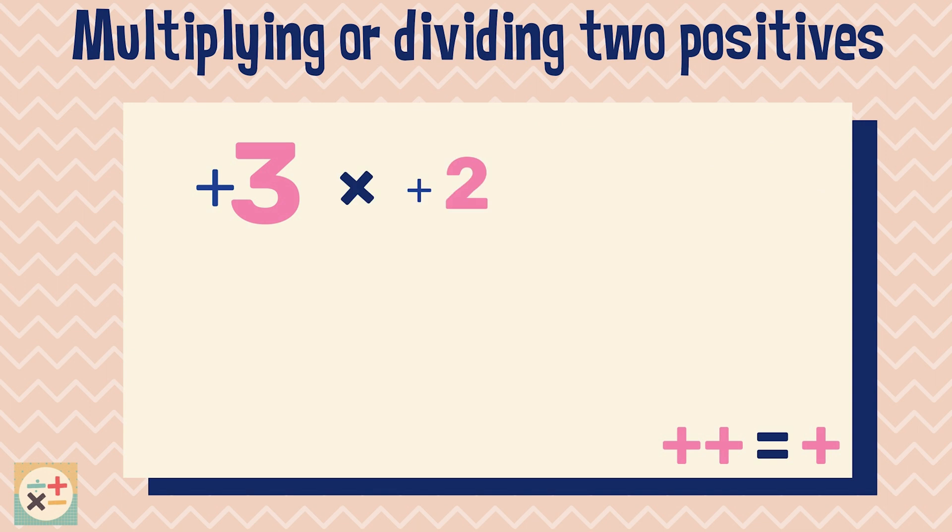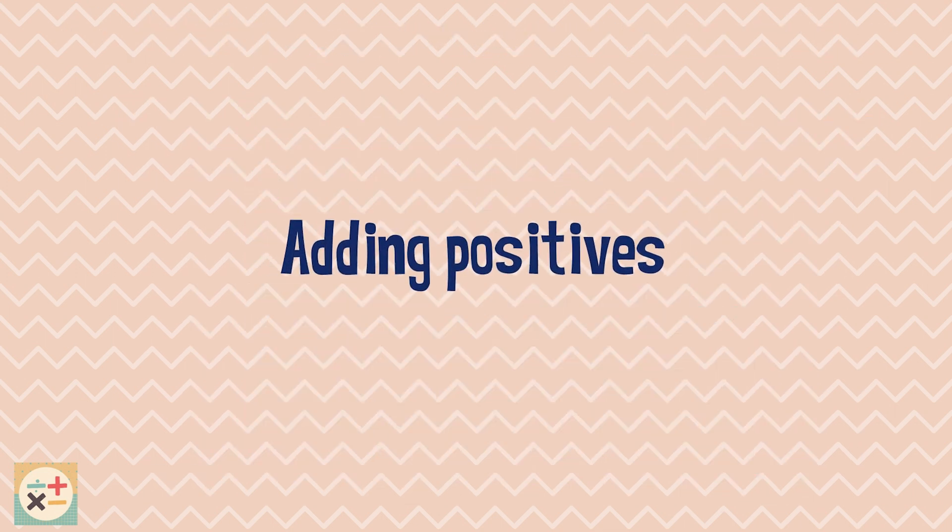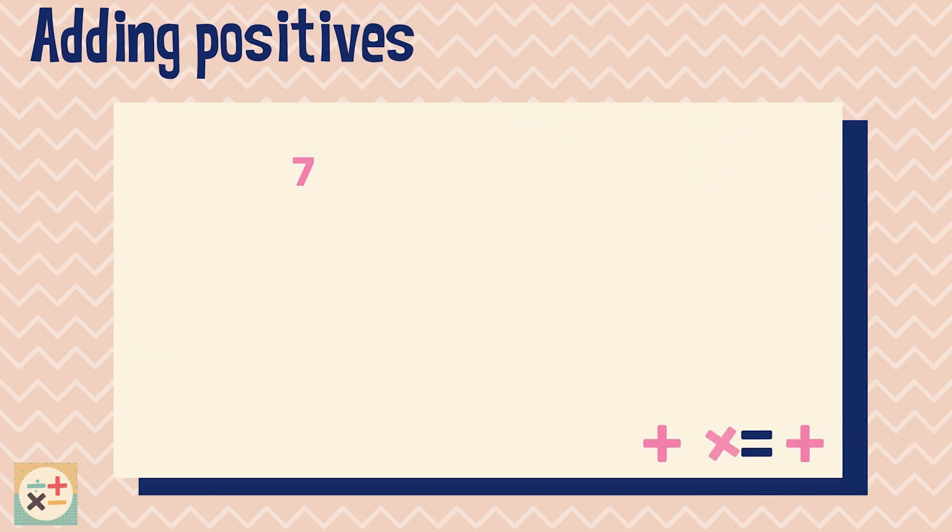If you are multiplying or dividing two positive numbers, the result will be positive. For positive numbers, the signs are usually omitted to make things clearer. If there's no sign in front of a number, assume it is positive. If you are adding a positive number or letter, you can change it to a single addition sign.